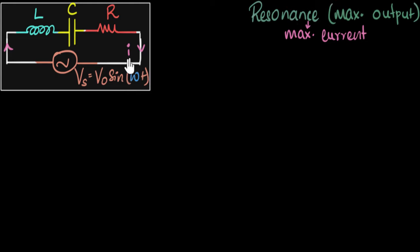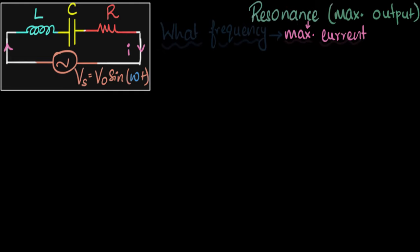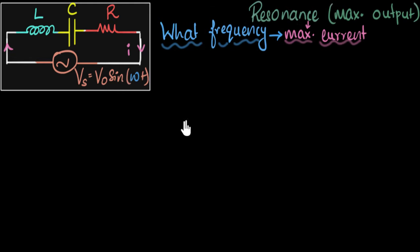And in our case, we can think of the current as the output. So basically, we're asking, what is the maximum current? Getting maximum current is what we will call resonance. And so the question we want to try and answer in this video is, for what input frequency — the frequency at which we are supplying the supply voltage — are we going to get the maximum current?